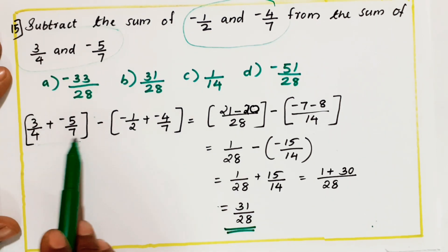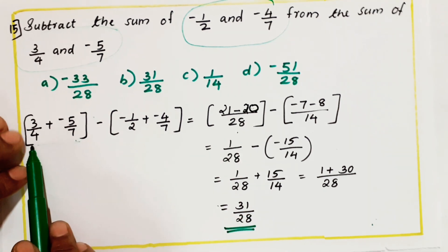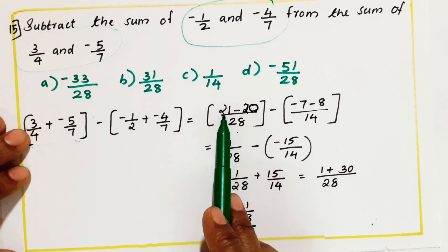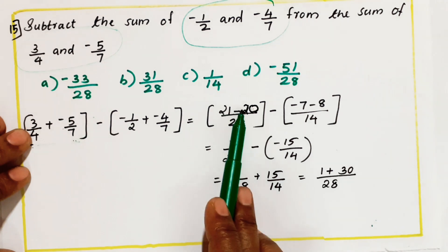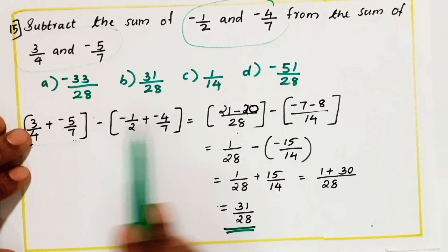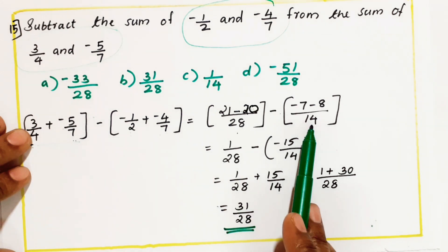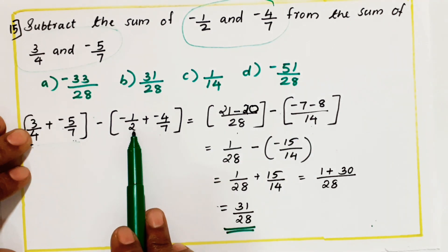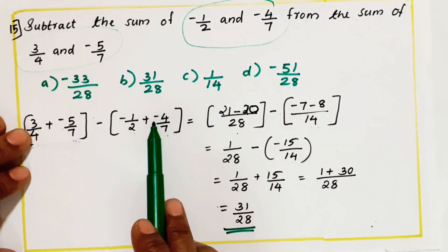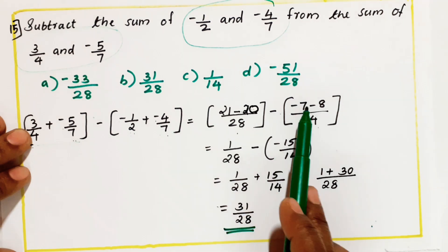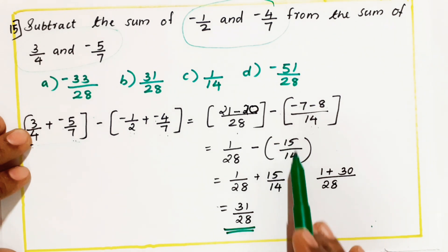What is the LCM of 4 and 7? LCM is 28. 28 divided by 4 is 7, and 7 into 3 is 21. Then 28 divided by 7 is 4, and 4 into minus 5 is minus 20. For the second bracket, LCM of 2 and 7 is 14. 14 divided by 2 is 7, with a minus sign so minus 7. 14 divided by 7 is 2, and 2 into 4 is 8, giving minus 8. So the first sum is 1 by 28, and adding we get minus 15 by 14.